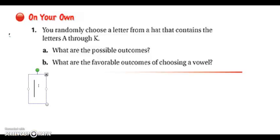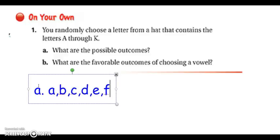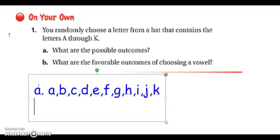So let's see what we came up with. So the possible outcomes include all the letters between A and K. So A, B, C, D, E, F, G, H, I, J, K. So there are 11 possible outcomes. For B, I want to know what are the favorable outcomes of choosing a vowel. Well, if I reference my answers in A, I see that there is A, E, and I. Now I can't include O and U because they only exist in my possible outcomes, although they are vowels. In this case, I can only reference my possible outcomes.